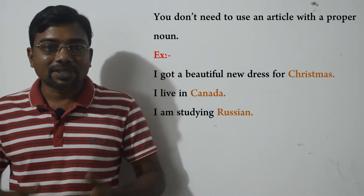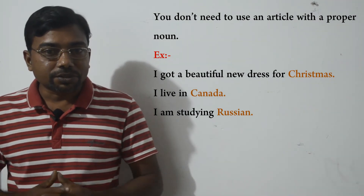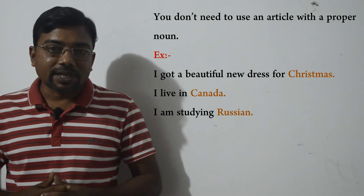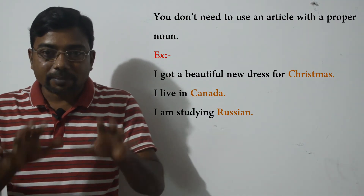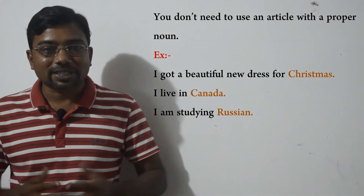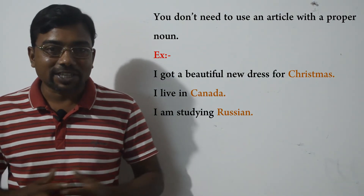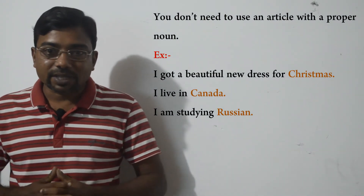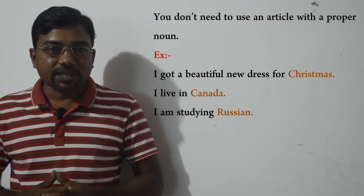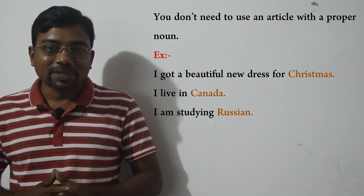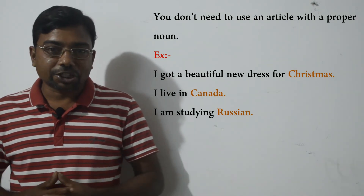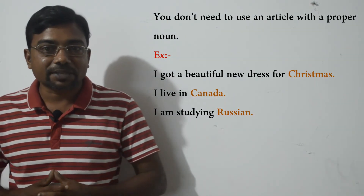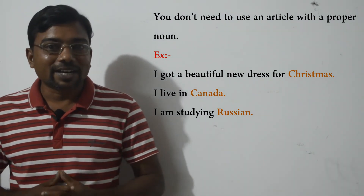Now let's look at another way we do not use articles. Remember, you don't need to use articles with proper nouns — for example, names of holidays, countries, companies, and languages. These are proper nouns. Look at this example: 'I got a beautiful new dress for Christmas.' Christmas is a proper noun, so we do not use articles with it. 'I live in Canada.' Canada is also a proper noun. 'I am studying Russian.' Russian is a language — it's a proper noun. So we do not use articles with proper nouns.